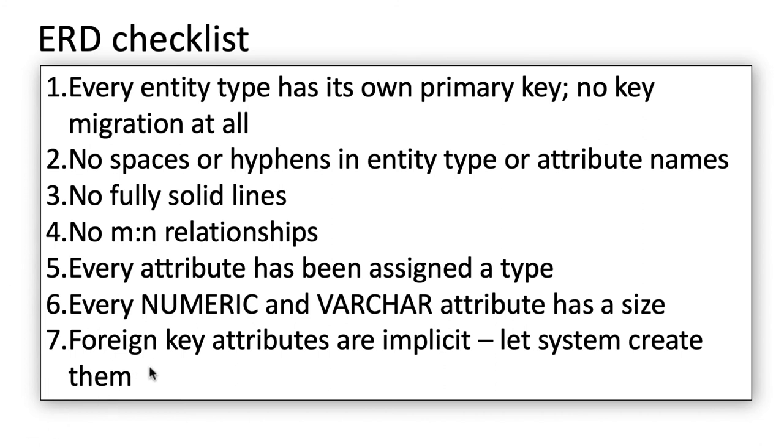Another very important thing is foreign key attributes are implicit. What I'm saying here is when you have a one-to-many relationship, we know that the entity on the many side of the relationship has the primary key of the entity on the one side of the relationship as a foreign key. We know that this is the case, but this is implicit. You should not be adding this foreign key by hand. The Oracle data modeler will automatically add this attribute, this foreign key attribute. So you shouldn't be messing with that.